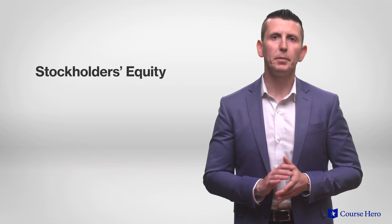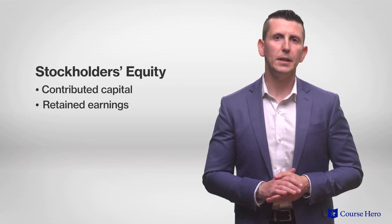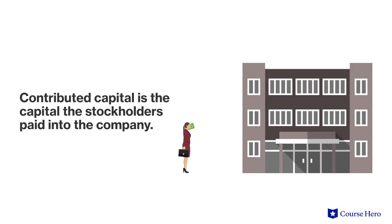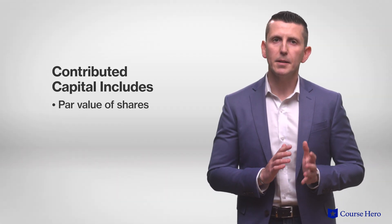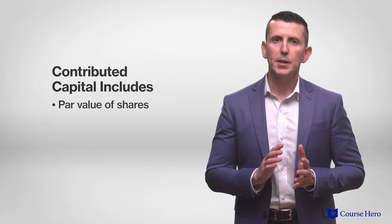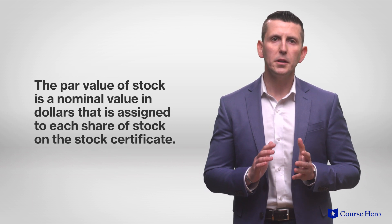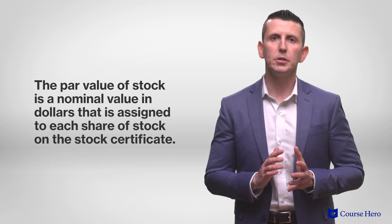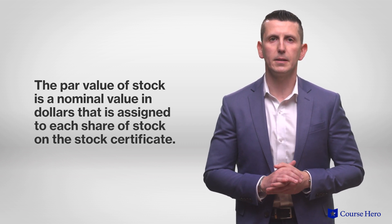Stockholders' equity is made up of two things: contributed capital and retained earnings. Contributed capital is the capital the stockholders paid into the company. This amount includes the par value of the shares themselves as well as any additional amount in excess of par value. The par value of the stock is a nominal value in dollars that is assigned to each share of stock on the stock certificate.